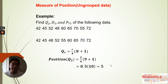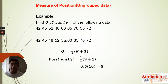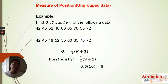Q2 is also the median and is at position 5. Counting through the arranged data: 1, 2, 3, 4, 5 — we land on 55. On the left side we have four data values and on the right side four data values, confirming it's the median. Therefore, Q2 = 55.